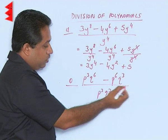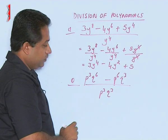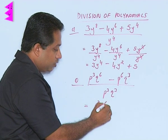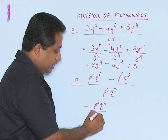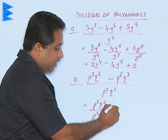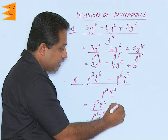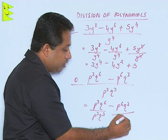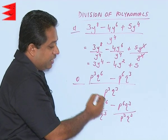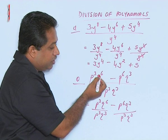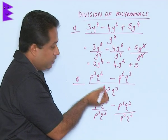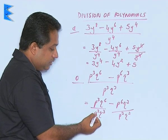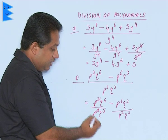The process will be the same — we are going to separate the terms. p³q⁶ is going to be divided by p³q³, and we are also going to divide the second term of the numerator, that is p⁶q³, by the same denominator p³q³. So separating the terms: the numerator has two terms and the denominator one term, so both terms are divided by p³q³.